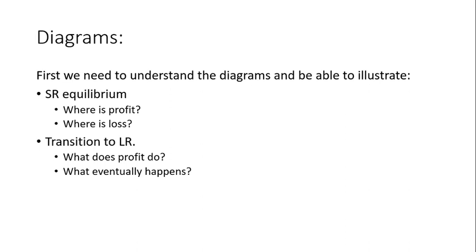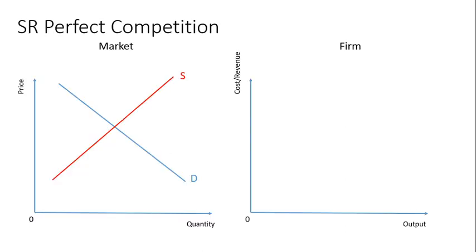Here's the typical setup for drawing perfect competition: two graphs side by side. On the left-hand side we've got the market — price and quantity, supply and demand — which we've seen since year one. On the right side we've got the firm, where we have cost, revenue, and output. Cost and revenue substitute for price because we're interested in the firm's cost and revenue curves. The output is the output of a particular firm, not the whole market.